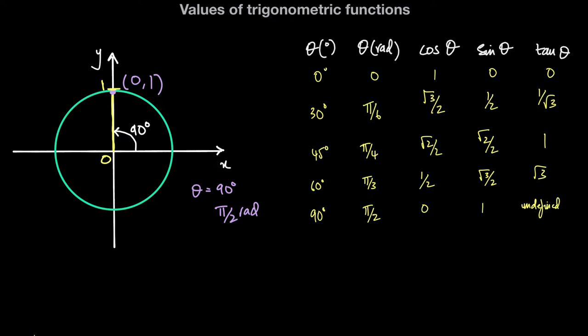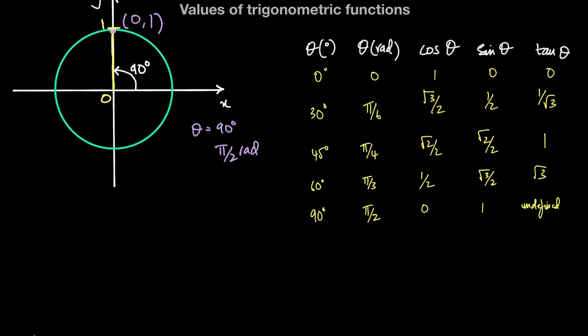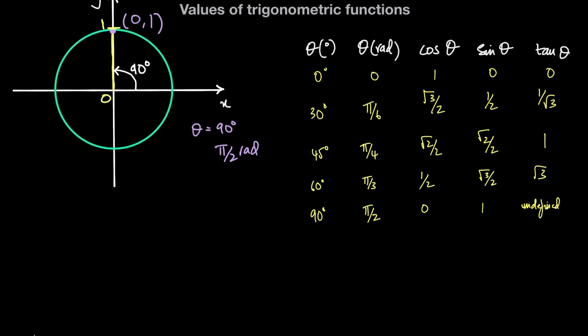These are the common values of theta — in degrees and in radians — and the associated values of the trigonometric functions. These are values that are very useful to remember and that you're expected to reproduce. An easy way to remember these values is to use the following triangles.